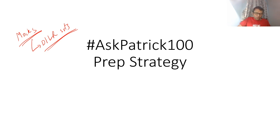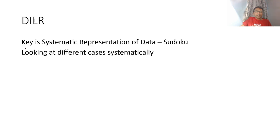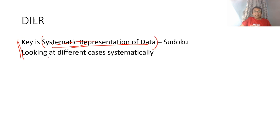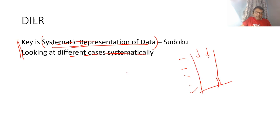Apart from mocks, you need to do Sudoku etc. Let me brief two things that are very important for DLR. One is you need to be systematically able to represent the data properly - if you don't represent the data properly you're bound to go wrong. Second important thing is that you have to look at different cases systematically. Once you represent the data you may have more than one case possible, so each case you have to look at systematically and figure out which case is possible and which is not.